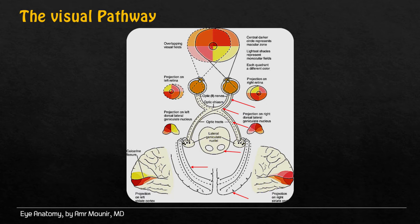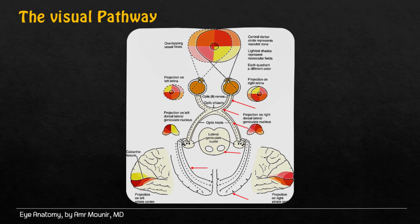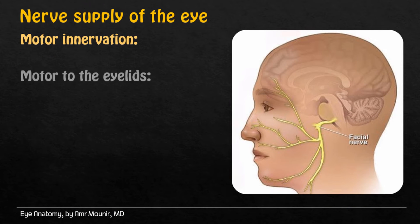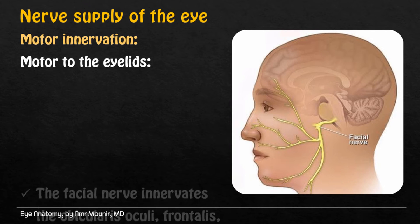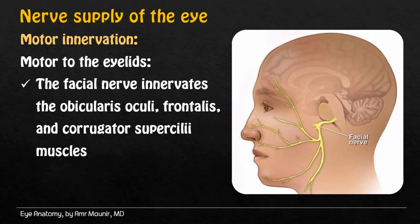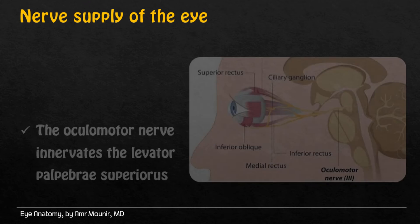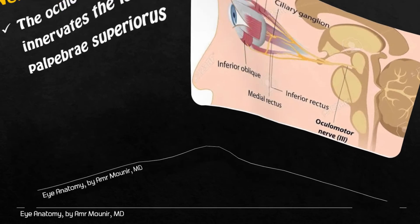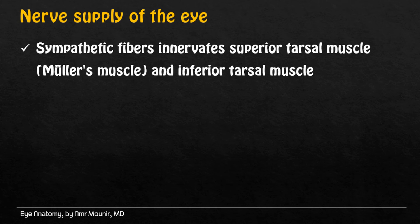Nerve supply of the eye includes the motor innervation part. Motor to the eyelids: the bifacial nerve innervates oculi's oculi, frontales, and corrugator subacilli muscles. The oculomotor nerve innervates the levator-palpebrae-subirosis muscle. Sympathetic fibers innervate the superior tarsus muscle, which is called molar muscle, and inferior tarsus muscle.